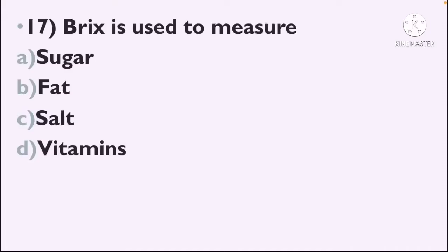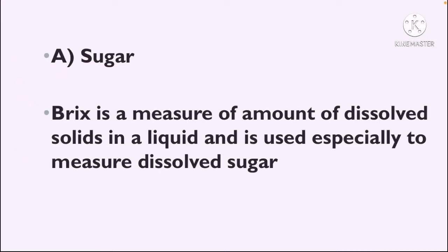Next question: Brix is used to measure — Option A: Sugar, Option B: Fat, Option C: Salt, Option D: Vitamins. The correct answer is Option A, Sugar. Brix is a measure of the amount of dissolved solids in a liquid, and is used especially to measure dissolved sugar.